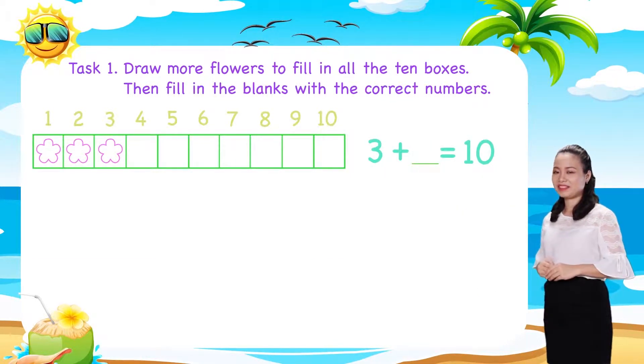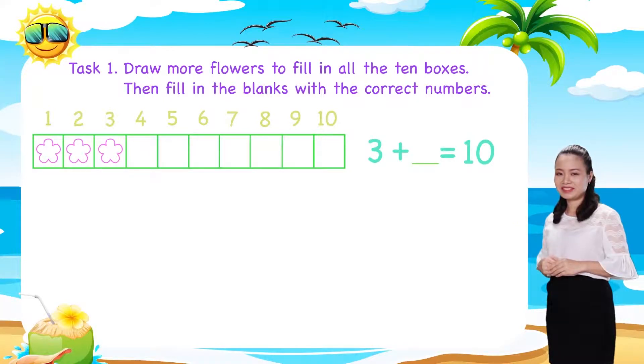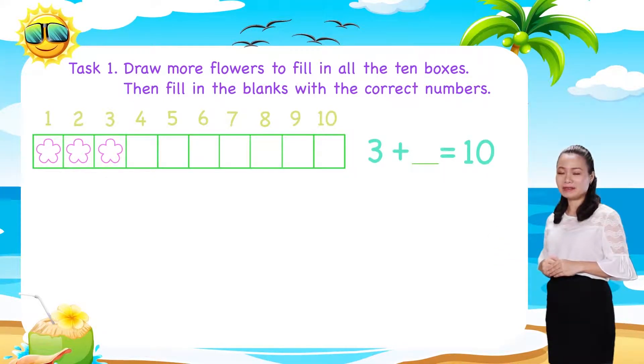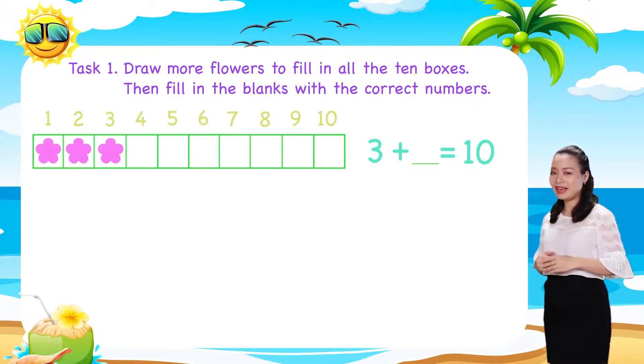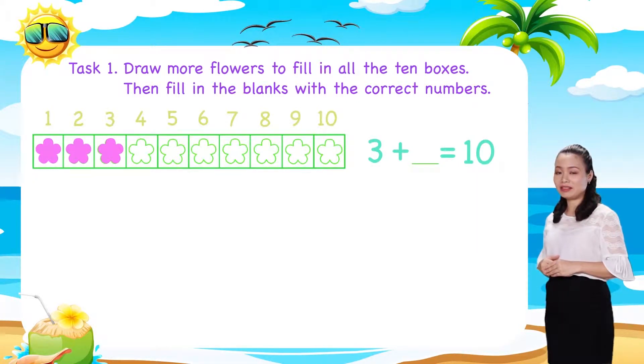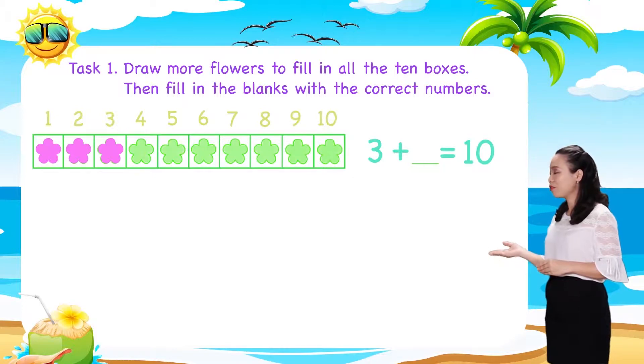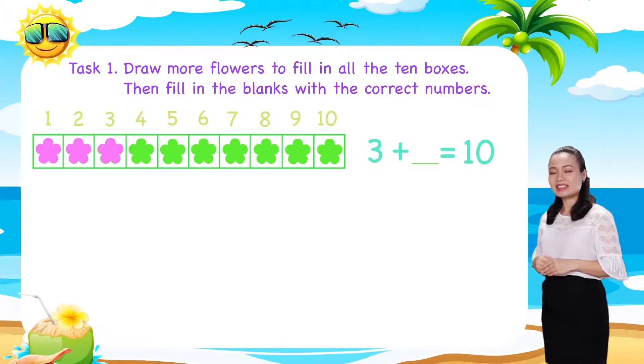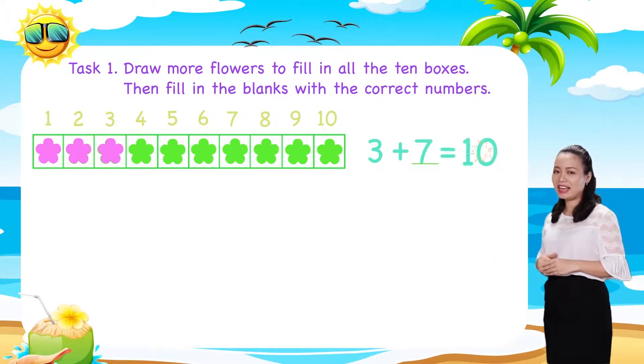Next, the third row. Here, we have 3 flowers. Let's colour them pink. 7 boxes are empty. Let's draw 7 more flowers. Colour them green. Thus, we have 3 plus 7 equals 10.